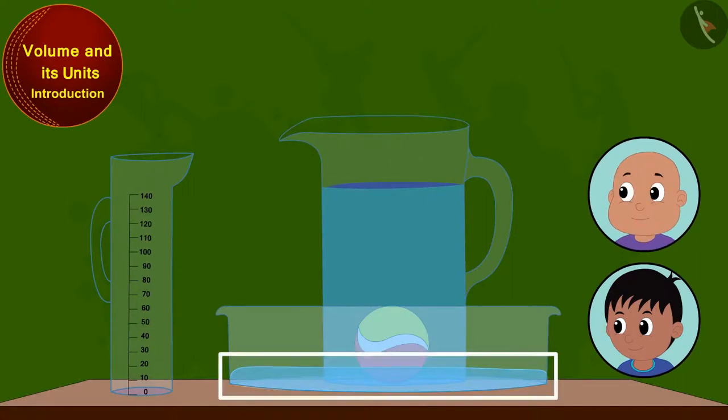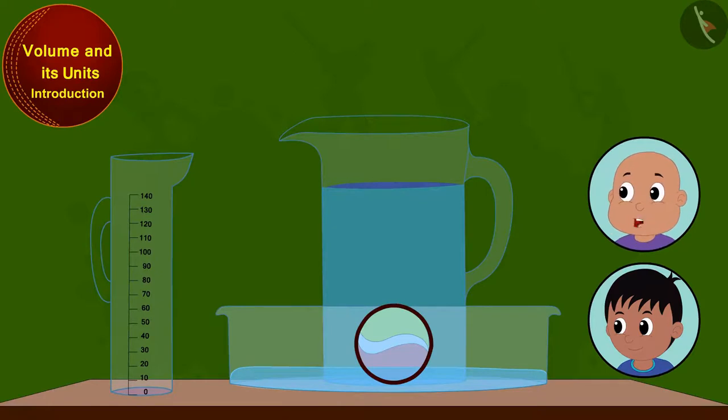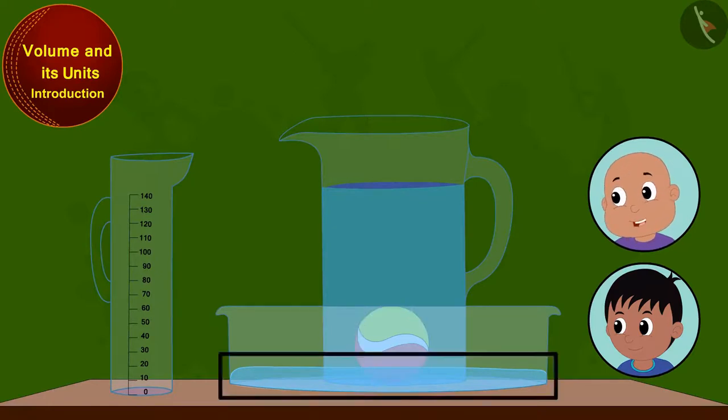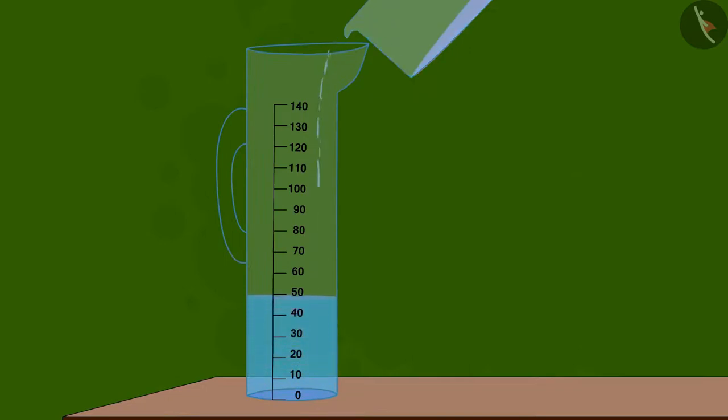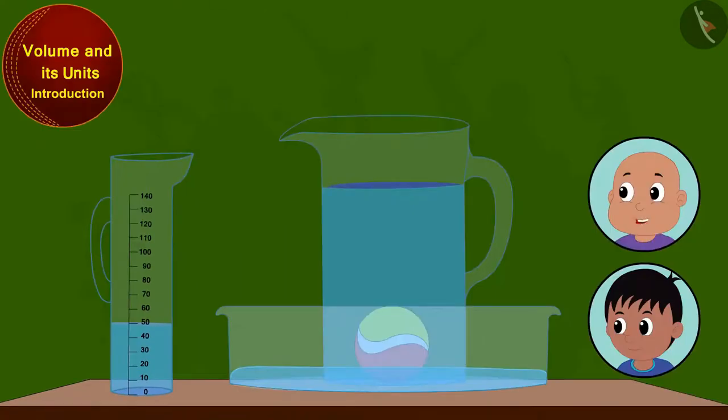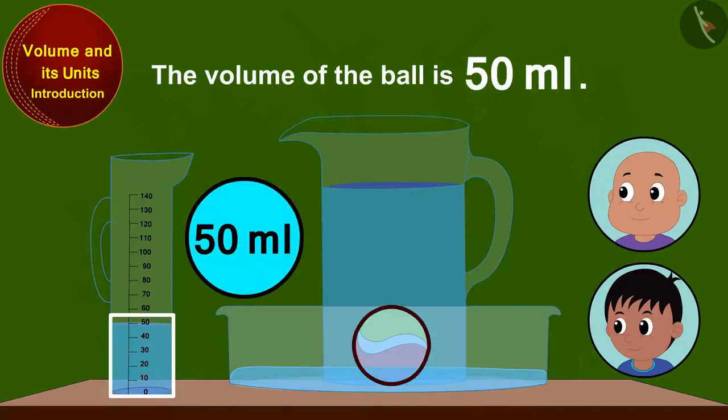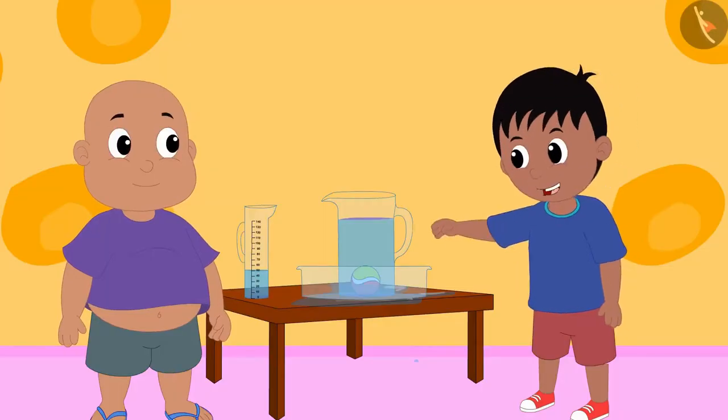The more the ball tries to make its space inside the jug, the more water spills out of the jug. This is called its volume. Here 50 milliliters of water spilled out of the jug, so we can say that the volume of the ball is 50 milliliters. Oh wow Bablu, this is so much fun!